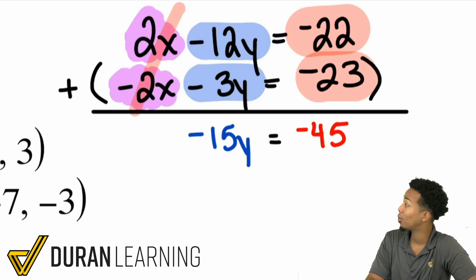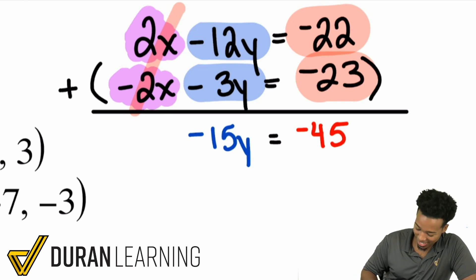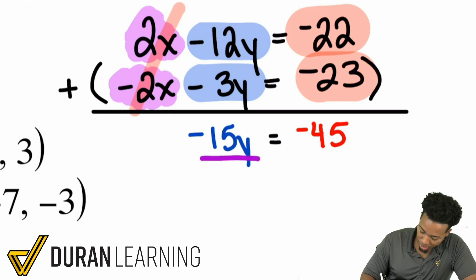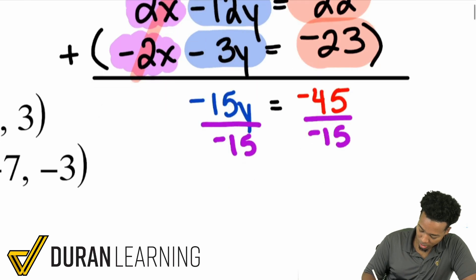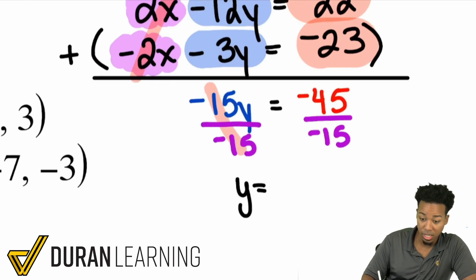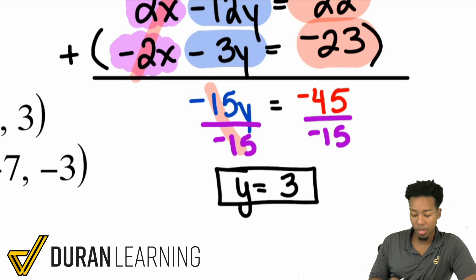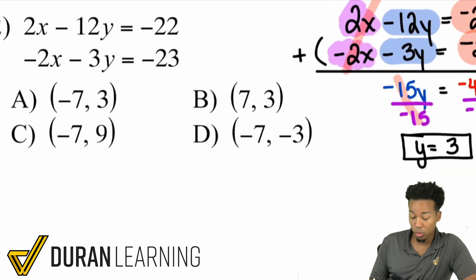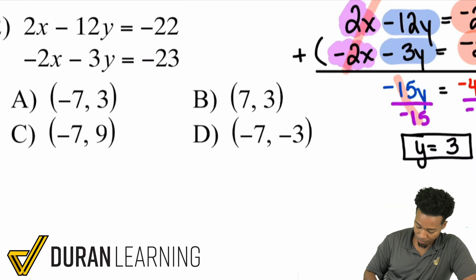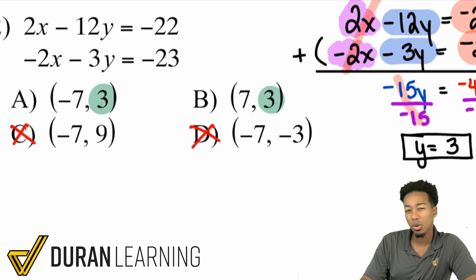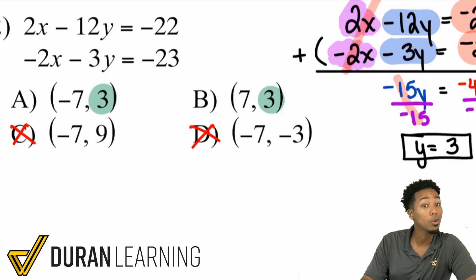So at this point we have negative 15y equals negative 45. We're going to divide both sides by negative 15. Negative 45 divided by negative 15 is positive 3 — a negative divided by a negative is a positive. So y equals positive 3. If you take a look at the answer choices, there's a positive 3 in two of them, so we can eliminate c and d. But we don't know what x is yet — two of these answers have positive 3 as the y value. Let's find out what x is so we can pick the correct answer.